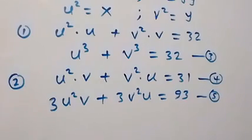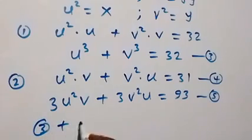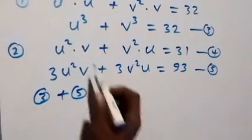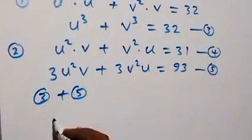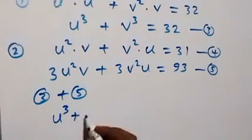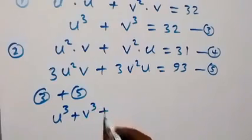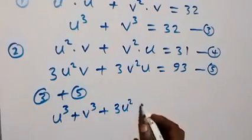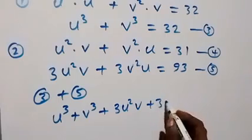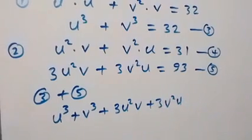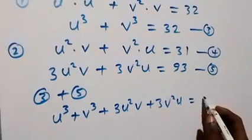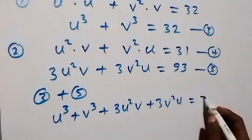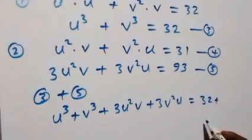Now let's add equation 3 and equation 5. On the left-hand side we have u cubed plus v cubed from equation 3, plus 3u squared v plus 3v squared u from equation 5. On the right-hand side we have 32 plus 93.